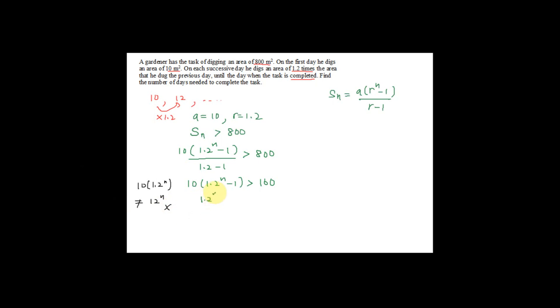So what you should do here is 1.2 power n minus 1 more than 160 divided by 10, which is 16. Therefore, 1.2 power n more than 16 plus 1, which is 17. Now you can put log both sides. That is log 1.2 power n more than log 17. Bring the power in front, n log 1.2 more than log 17. Therefore, n more than log 17 divided by log 1.2. n should be more than 15.53.